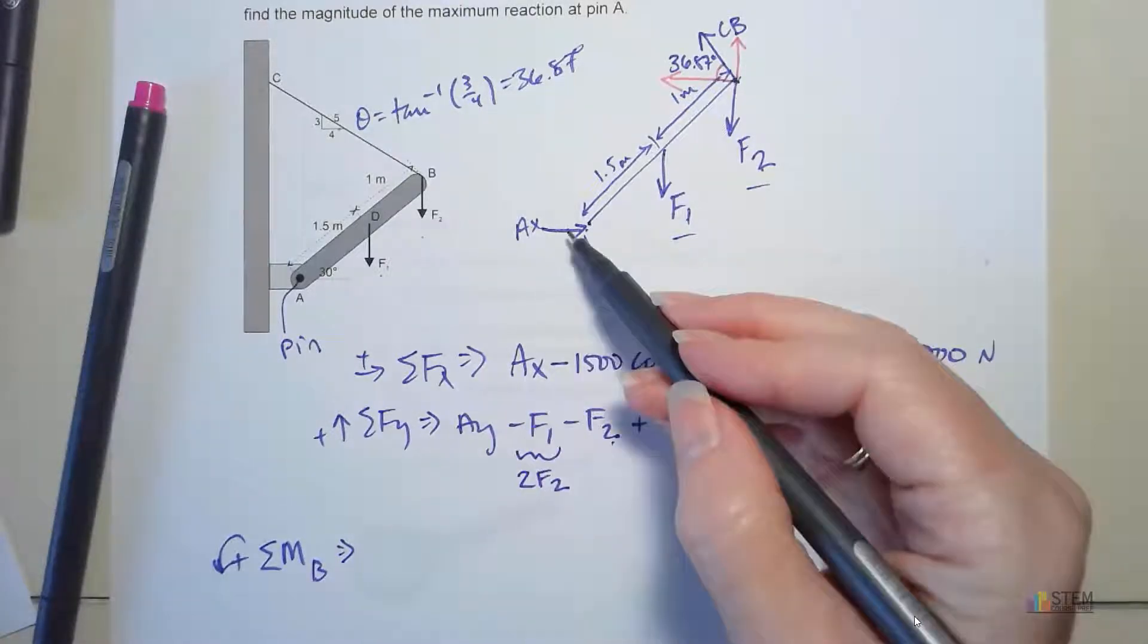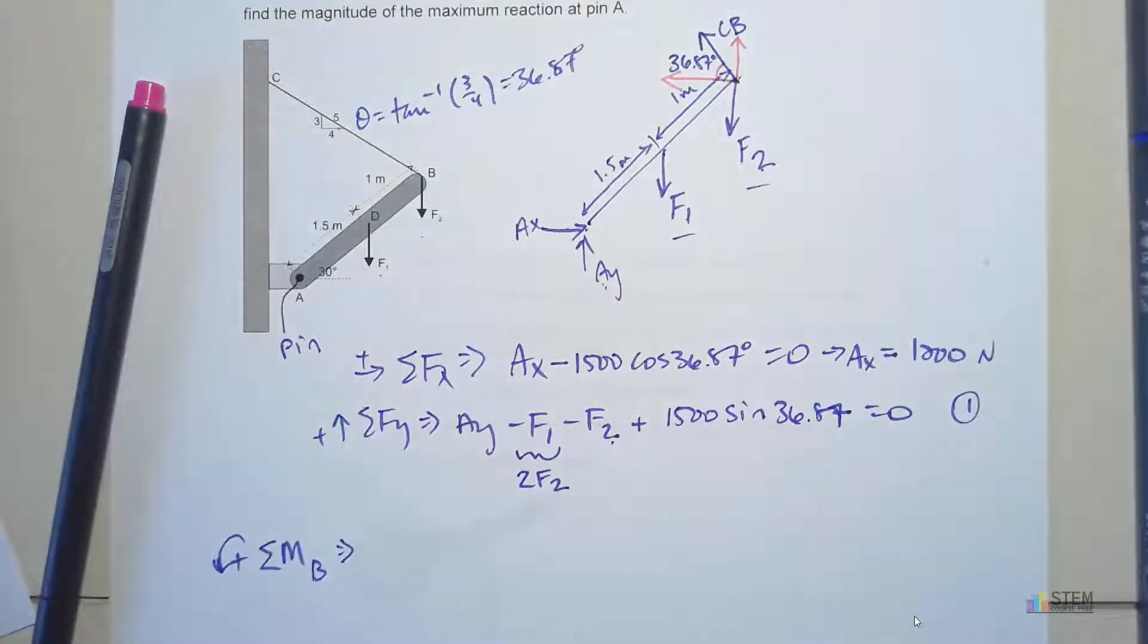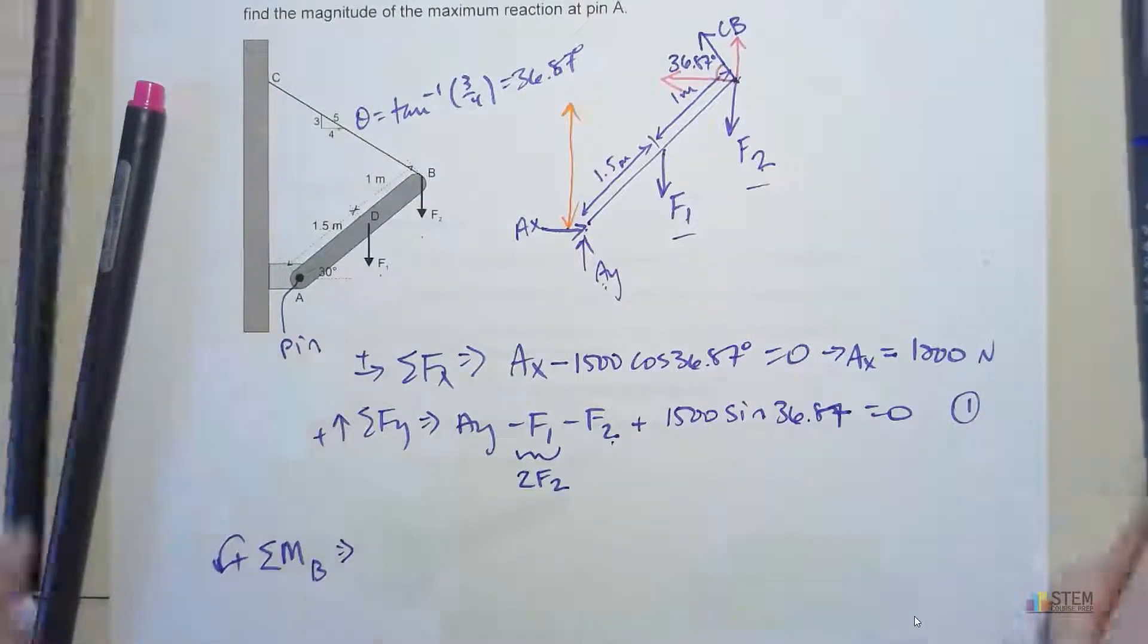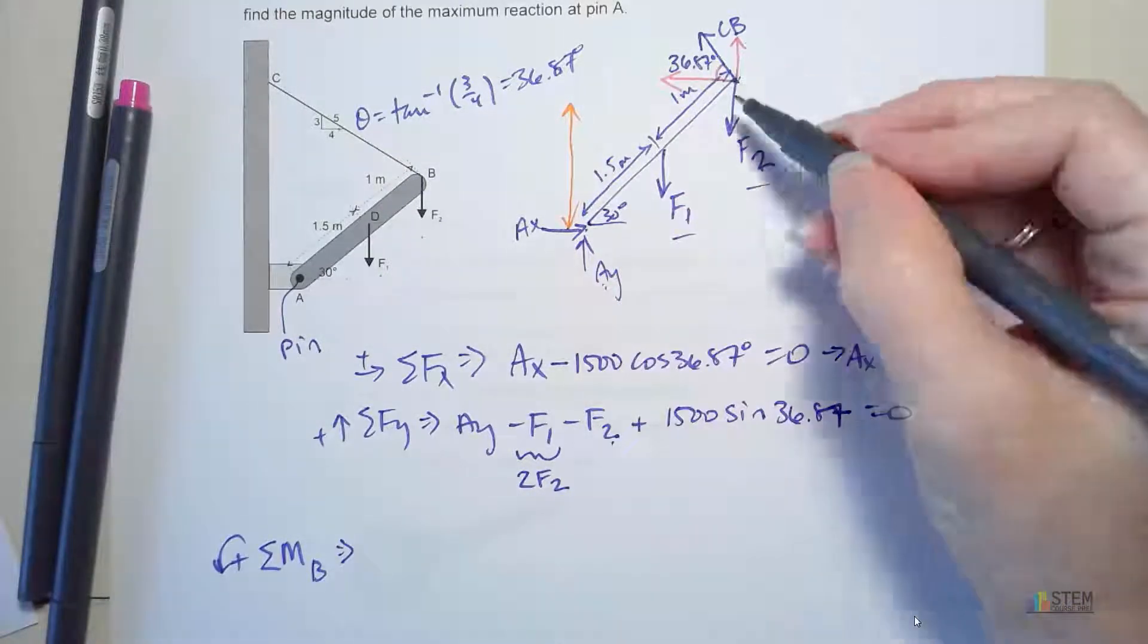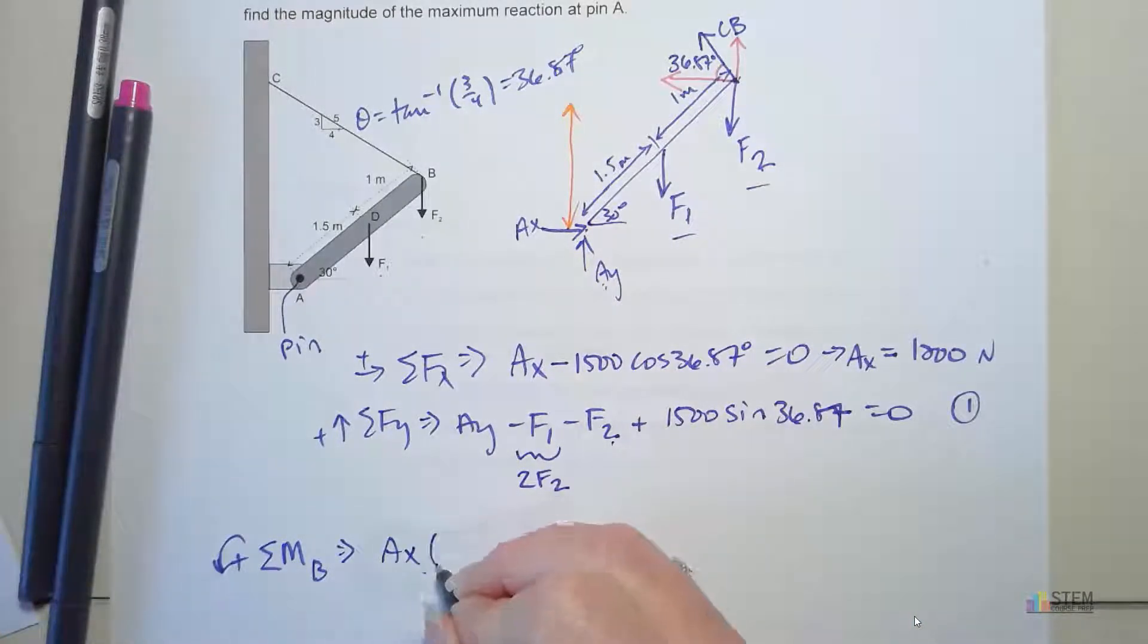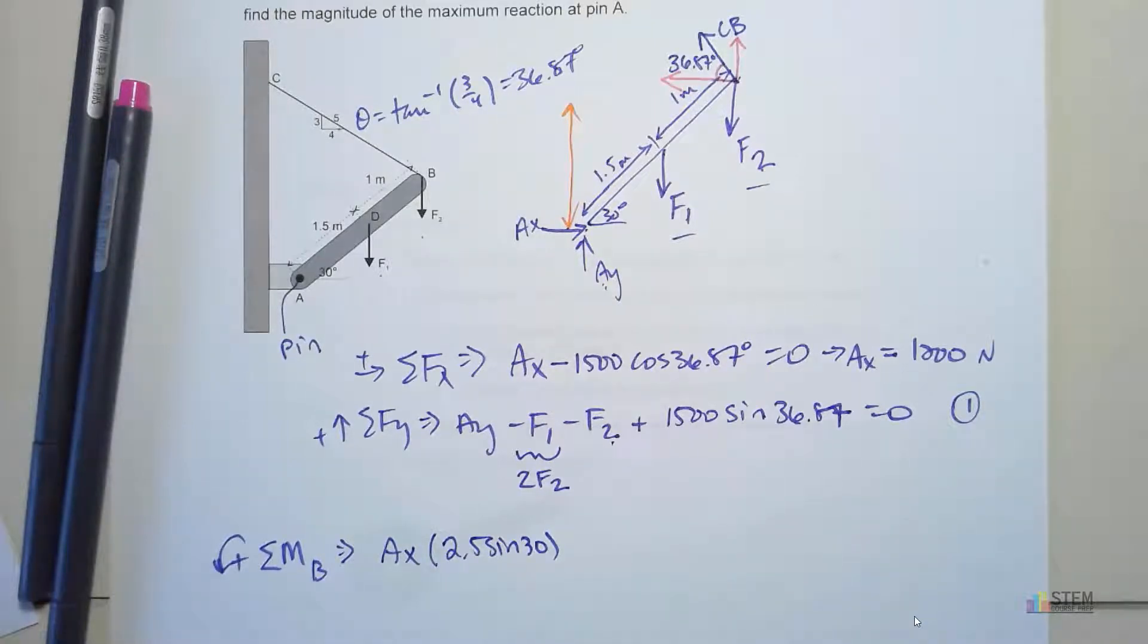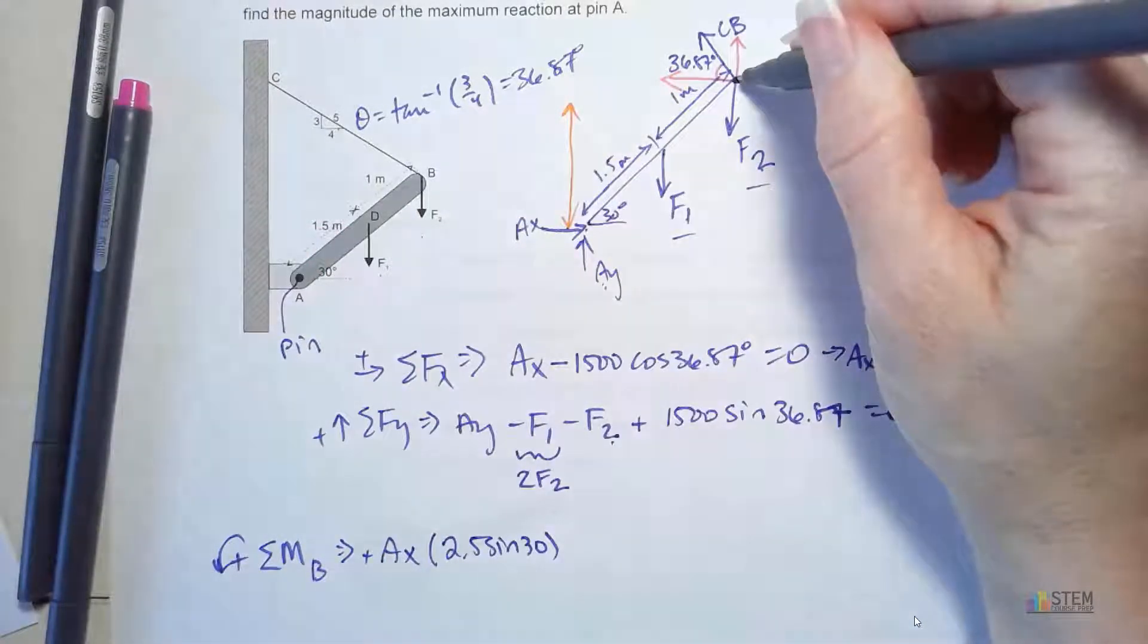Let's find our moments about point B. Ax has a moment about B, and the distance that we need is going to be this distance right there. If you think about that, how would we find it? We know that this is 30 degrees, this length here is 2.5. So that means our moment arm distance is going to be 2.5 sine 30, because that will give us this length right here. Is that positive or negative? That's going to be a positive rotation about this point, because if this thing was free to rotate and I'm holding on to this, that force would push it that way, which is counterclockwise.